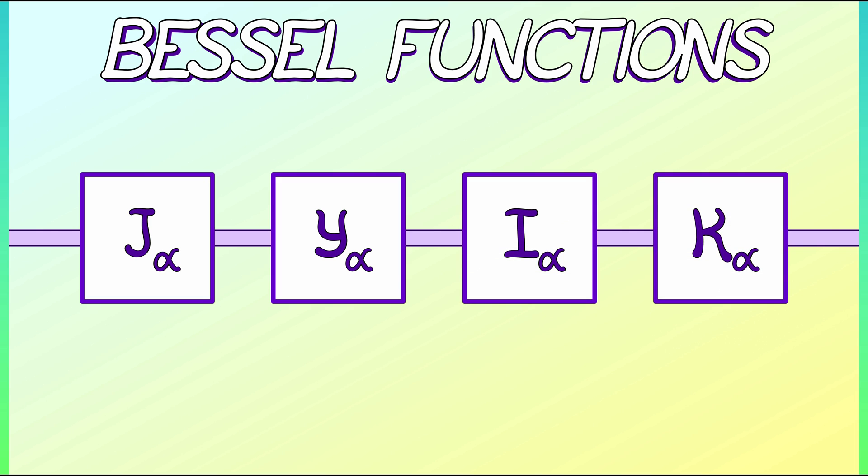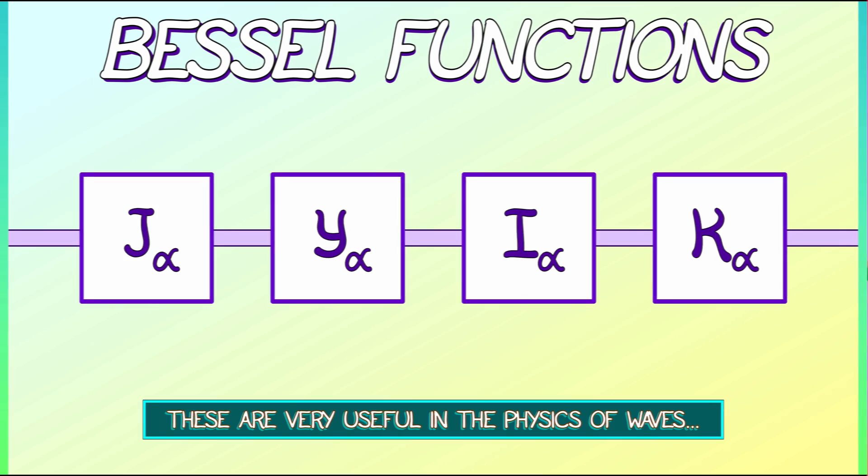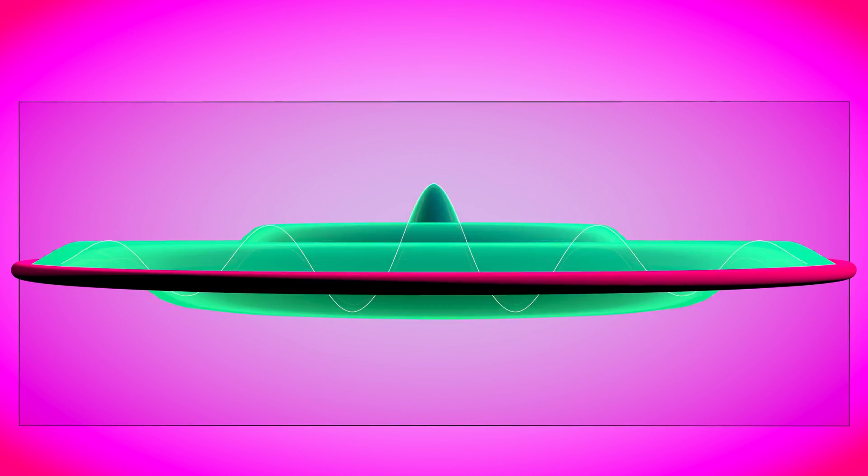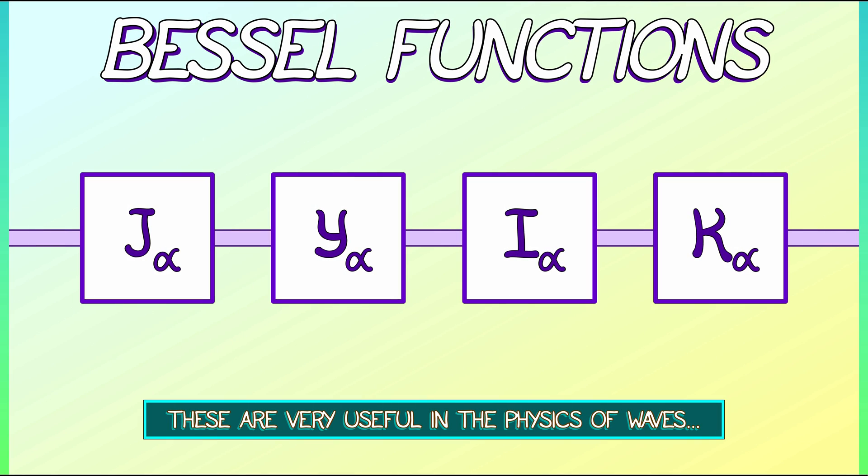Speaking of waves, the Bessel functions are incredibly useful in talking about the physics of waves. These come in four different families: J sub α, Y sub α, I sub α, K sub α, each of which, again, has a parameter α that can be anything you want. These functions, very complicated, very hard to write down explicit definitions of, but they are very useful. We will see them later when we talk about vibrating membranes, where we talk about rotating chains, things like this. Those are the Bessel functions.